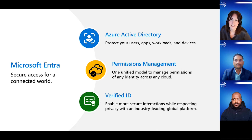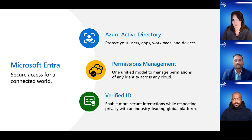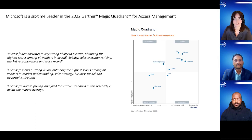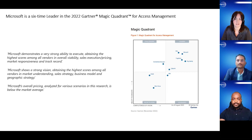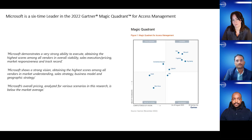Then we've got Microsoft Entra Verified ID. This is a managed service for verifiable credentials — it provides a way to issue and verify digital credentials with end users or organizations as part of an identity verification process, essentially a portable credential. We're honored to announce that Microsoft has been named a leader in the 2022 Gartner Magic Quadrant for Access Management for Microsoft Azure Active Directory, forming part of Microsoft Entra. It inspires us to grow our product portfolio and introduce innovative solutions so customers can do more with less.